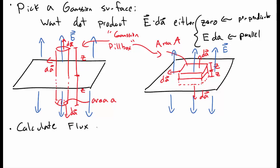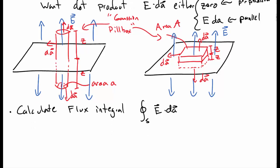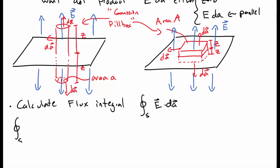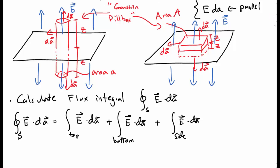Okay, so now that we've got our Gaussian surface, we can compute the flux integral, the closed surface integral of E dot dA. And no matter which one you choose, which pillbox you choose, this is going to consist of three different parts. So there's a surface integral over just the top. There's a surface integral over just the bottom. And then there's a surface integral over the side of the Gaussian pillbox, whichever pillbox you use. So let's look at each in turn.